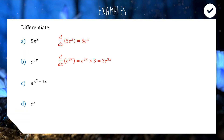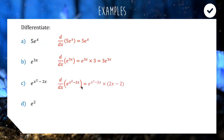The next one uses the same logic — we differentiate e to the power of x squared minus 2x. The exponential term remains the same; we just multiply by the derivative of what's in the index. Differentiating the index gives us 2x minus 2, so our answer is (2x minus 2) times e to the x squared minus 2x. You can write the derivative of the power at the front or the back — it doesn't matter.